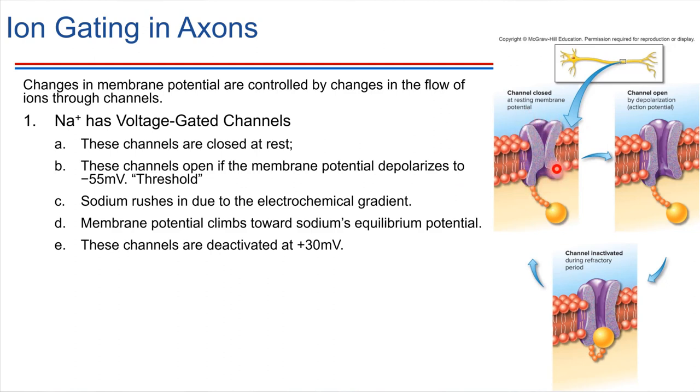It is ordinarily closed. So when the cell is at rest, when the membrane potential is minus 70 millivolts, this channel is going to be closed. It does not allow sodium to flow through.